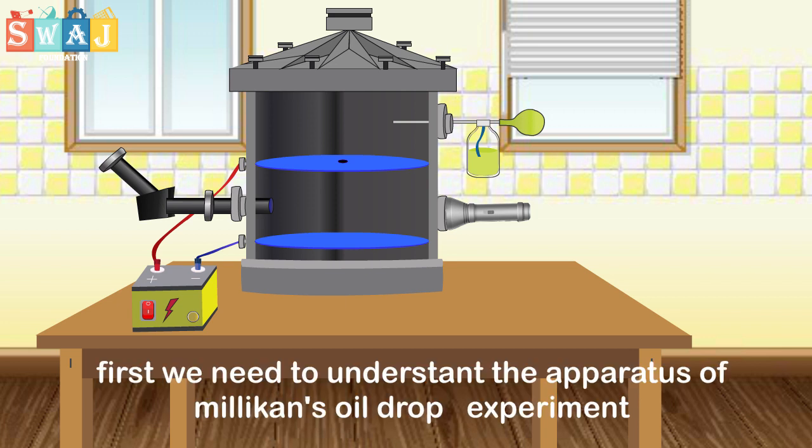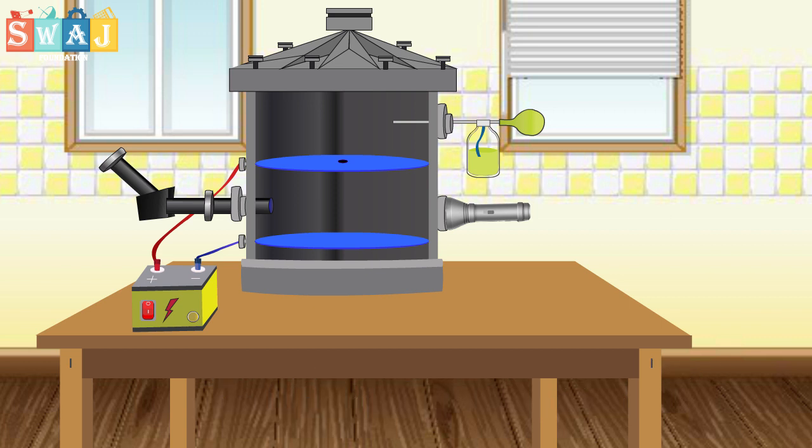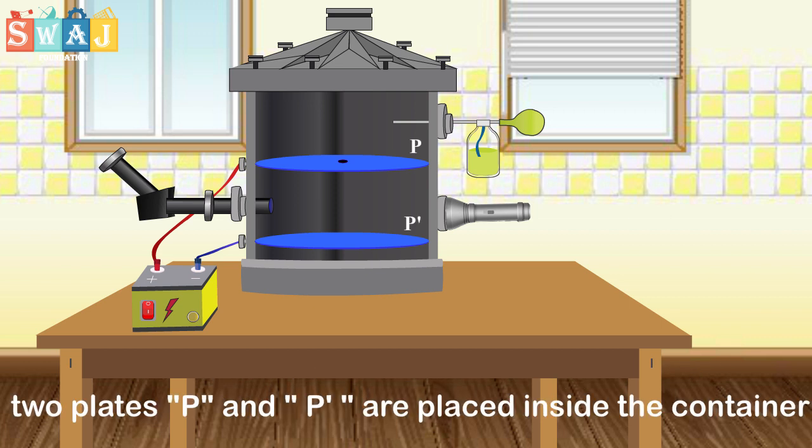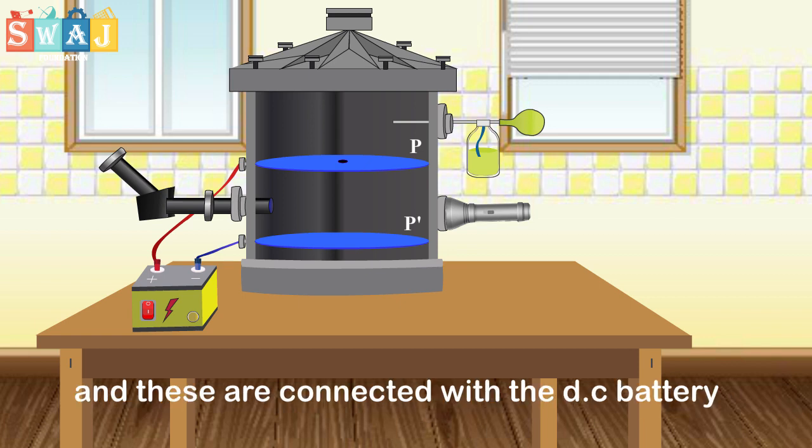First, we need to understand the apparatus of Millikan's oil drop experiment. Two plates PP' are placed inside a container and these are connected with the DC battery.